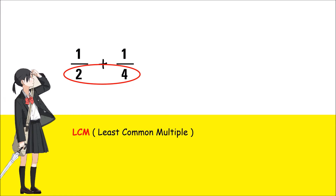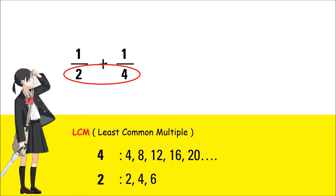Let's start with the highest denominator. The list of multiples for 4 are 4, 8, 12, 16, 20 and so on. The list of multiples for 2 are 2, 4, 6, 8, 10, 12 and so on. The common multiples of 2 and 4 are 4, 8, and 12. Among these three, the least common multiple is 4.